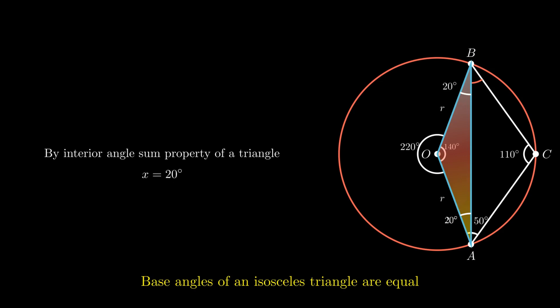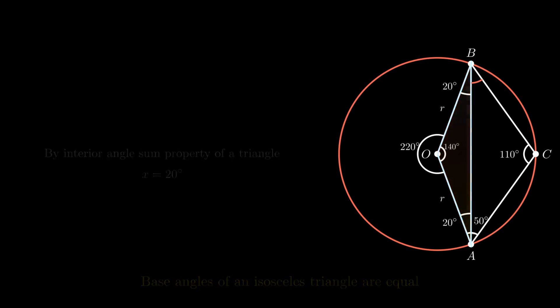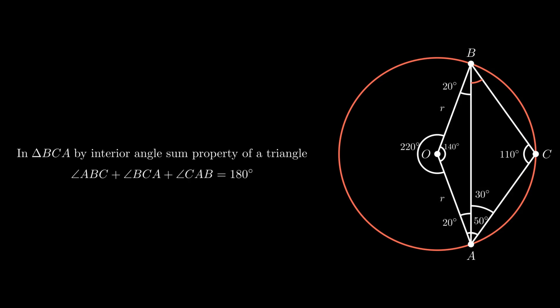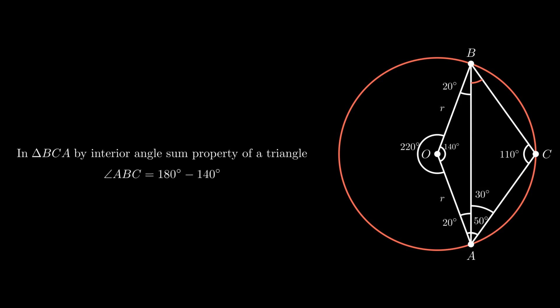Therefore both angles OAB and OBA are equal to 20 degrees. Now from the figure, angle BAC equals 50 degrees minus 20 degrees, which is equal to 30 degrees. For the calculation of angle ABC, using the interior angle sum property in triangle ABC and simplifying, we get angle ABC equals 180 minus 140 degrees, which is equal to 40 degrees.